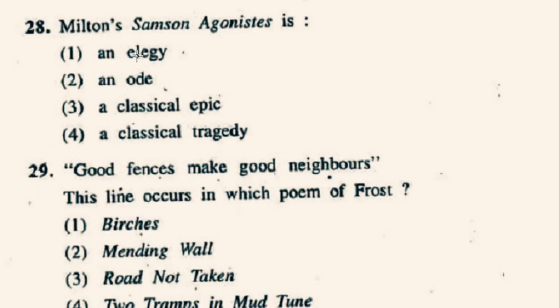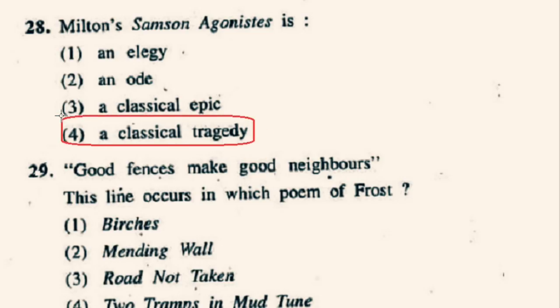Question number 28: Milton's Samson Agonistes is what? John Milton's Samson Agonistes is a classical tragedy. It was published in 1671. It is a story of destiny, heroism, the fate of a nation and the threat of seduction. So option 4th, a classical tragedy, is correct.